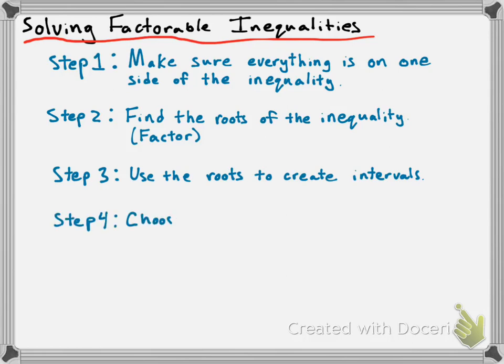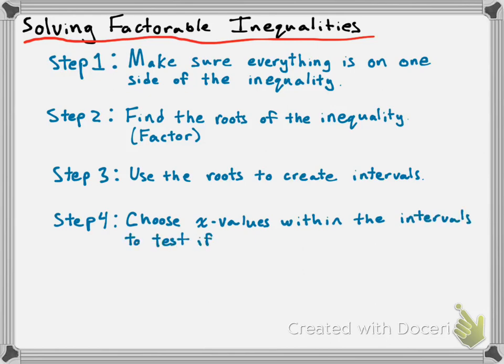Step four: choose x values somewhere within each interval to test if the function is negative or positive. We care about whether the function is negative or positive because after step one, we're checking to see where the polynomial is bigger than zero or less than zero. The test values will tell you where the function is bigger than zero or less than zero.